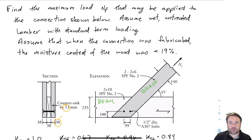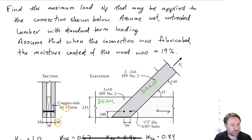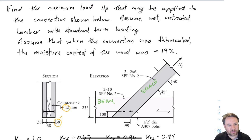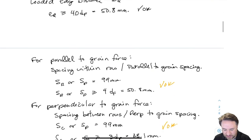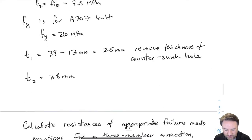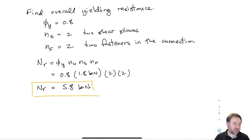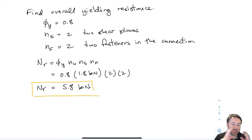Welcome back to wood engineering. I'm Jeff Barochico from Carleton University and in this video we're going to continue our example calculating the strength of this connection that has a timber beam connected to two parallel timber cross-bracing elements in a three-member connection. In the previous video we calculated all the spacing requirements and then we did the check for yielding resistance, and we found that the yielding resistance was 5.8 kilonewtons. Now we're going to move on and calculate all of the strengths on the beam side of the connection.